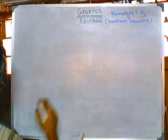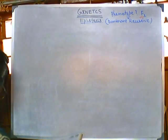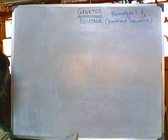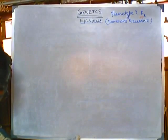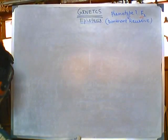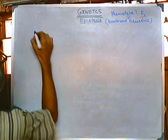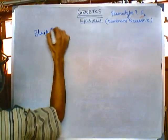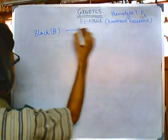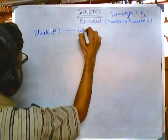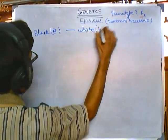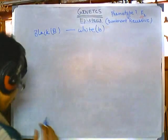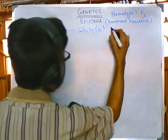In cattle coat color, caps B is dominant over small b, contributing to black and white color. So black color is caps B dominant over white color which is small b in cattle.